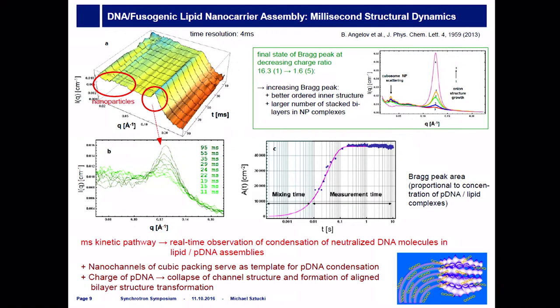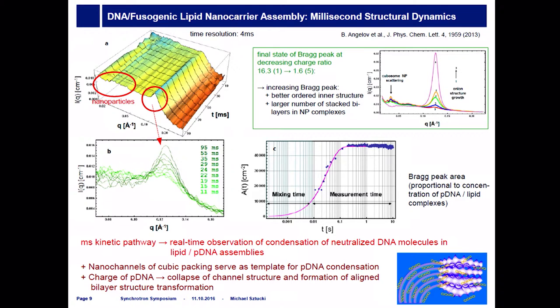When you do mixing of these components, you see the evolution of the scattering pattern as a function of time. First you see the nanoparticle characteristic maxima, which become less and less pronounced, and then the appearance of a new peak — a Bragg peak. This Bragg peak corresponds to a structural conformation change from the cubic configuration to a lamellar structure where the DNA can fit in. You can track the Bragg peak area, which is proportional to the concentration of DNA–lipid complexes, and follow the time resolution. The time scale here is one second, but we actually have a time resolution of four milliseconds, so in the sub-second range you can track with very high resolution how these products bind to the carrier.